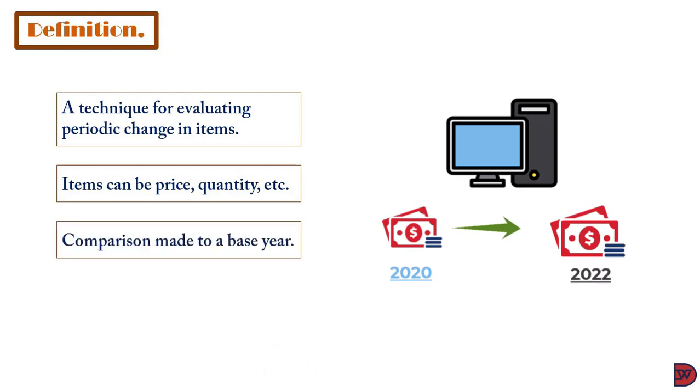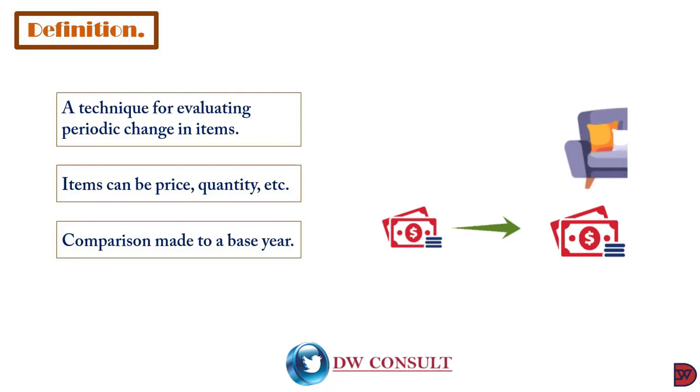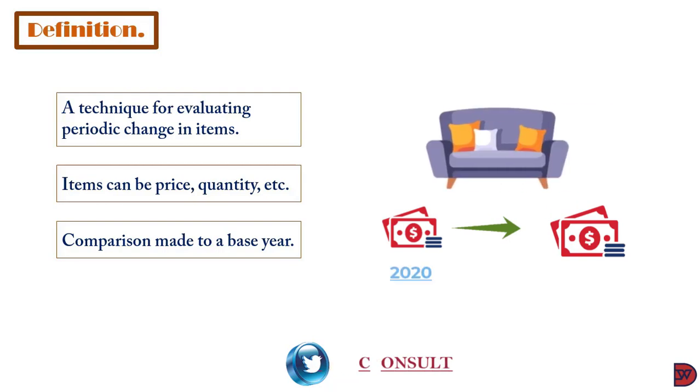In order for the comparison to be meaningful, one particular year is chosen as a reference against which the other years are measured. If a business wants to compare prices of furniture between 2020 and 2021, normally the earlier year (2020) is chosen as the reference point. This reference year is what we call the base.